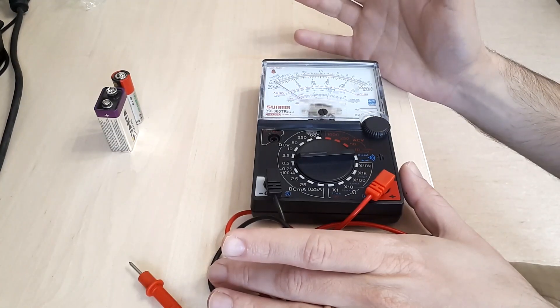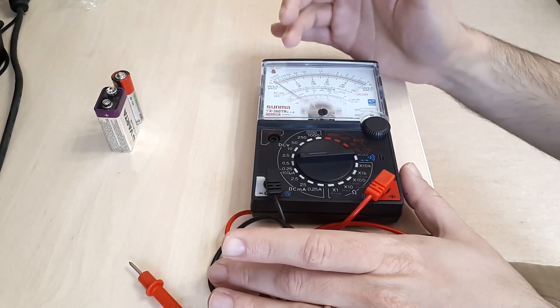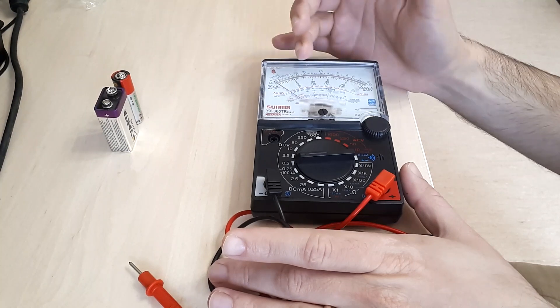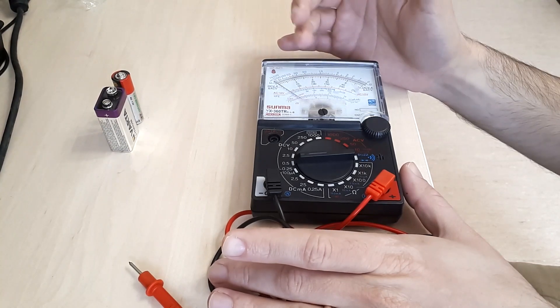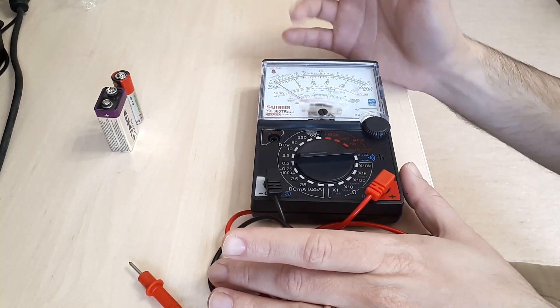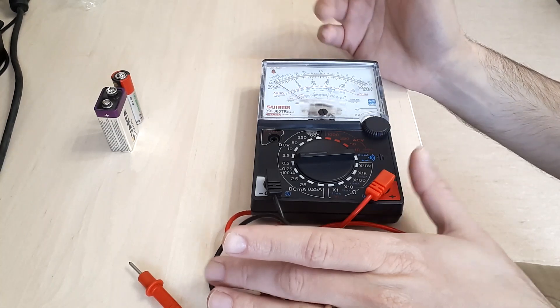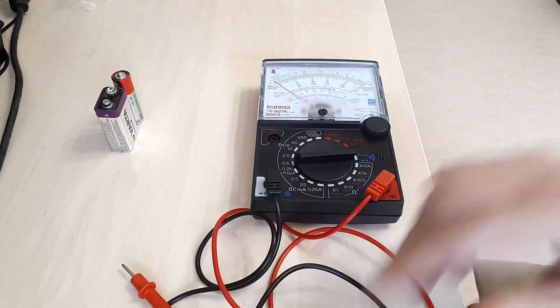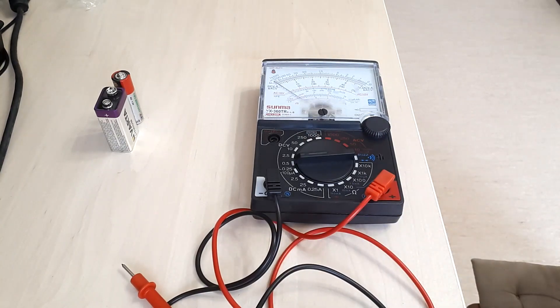There might be situations where an analog multimeter is better, and also the fact that you can see variations with a certain sensitivity that is still not possible with most cheap digital multimeters. These are some reasons why an analog multimeter may still be useful to certain users.